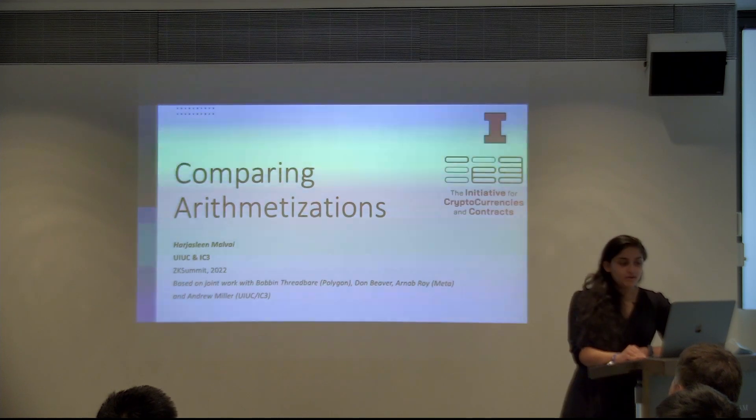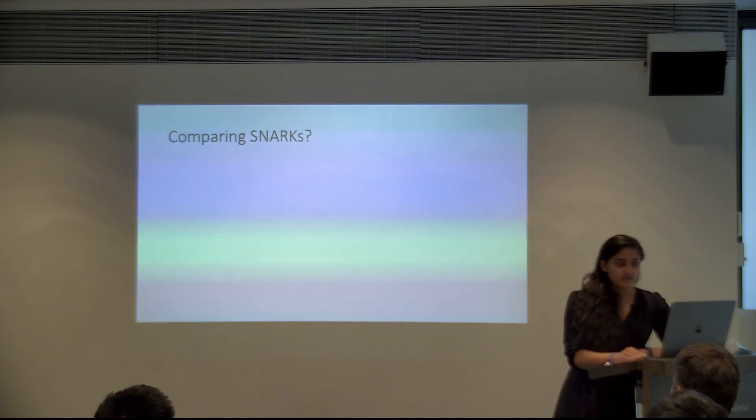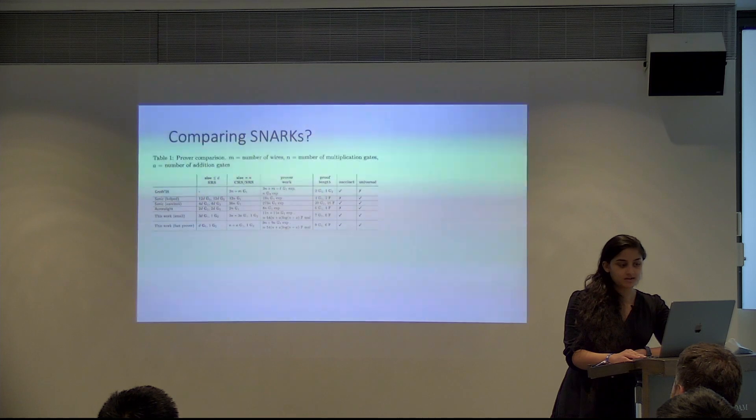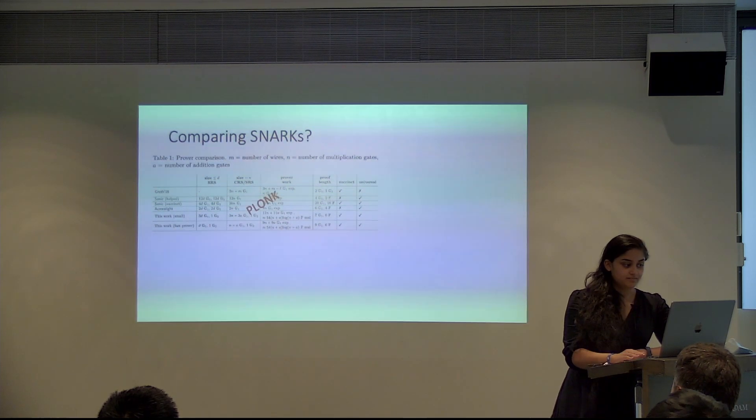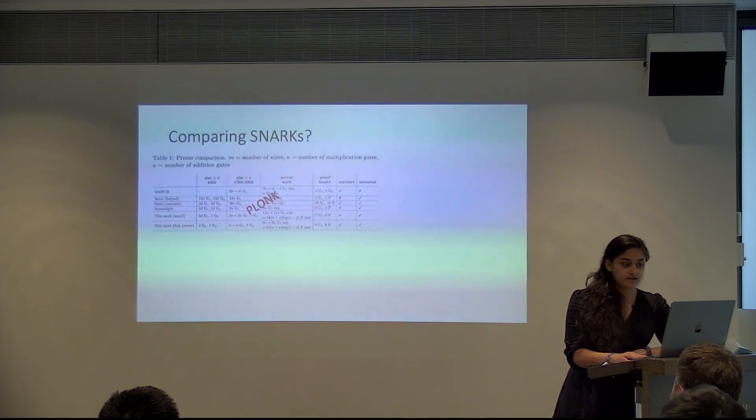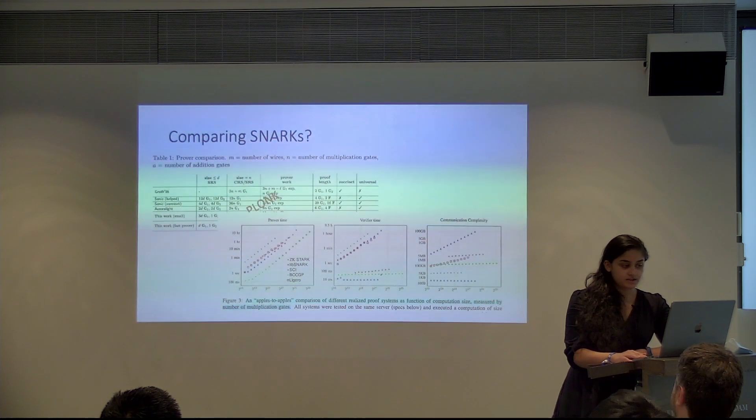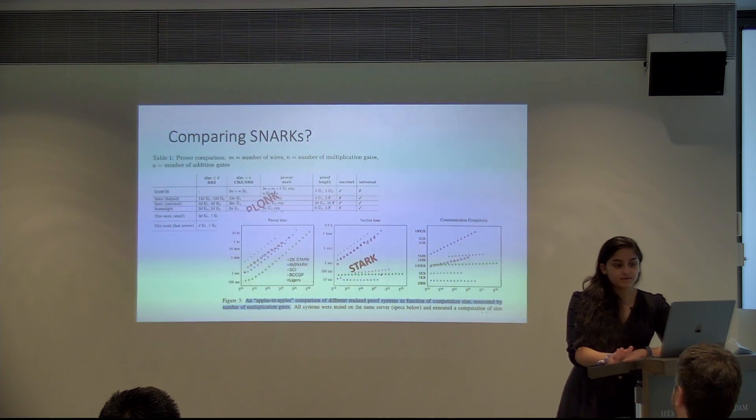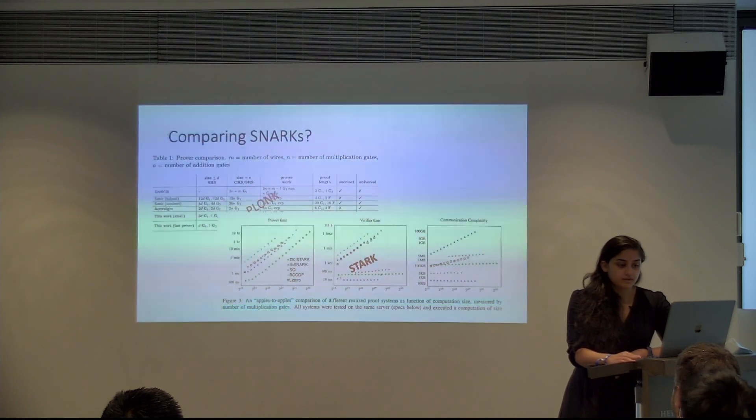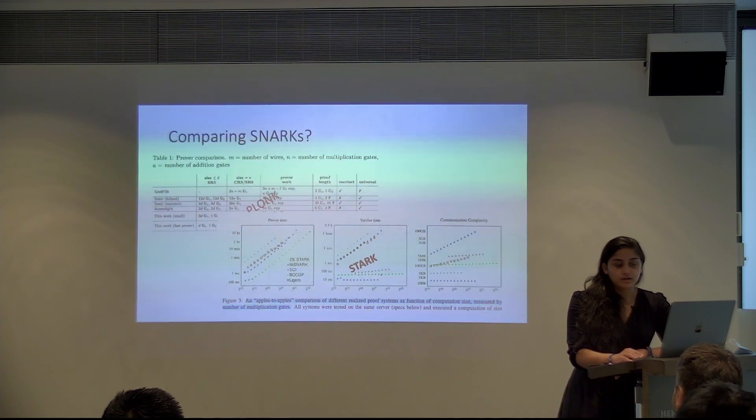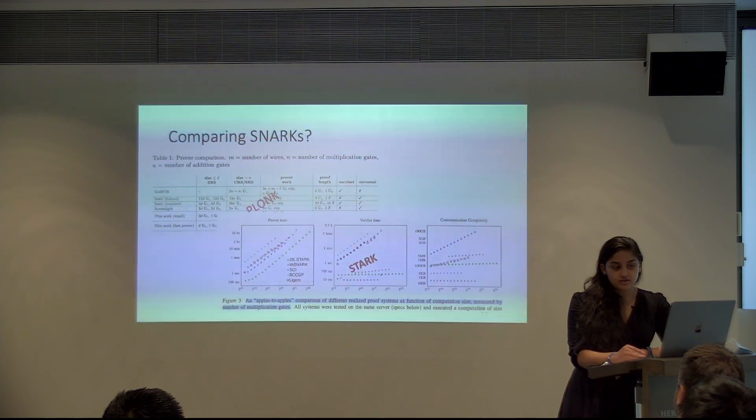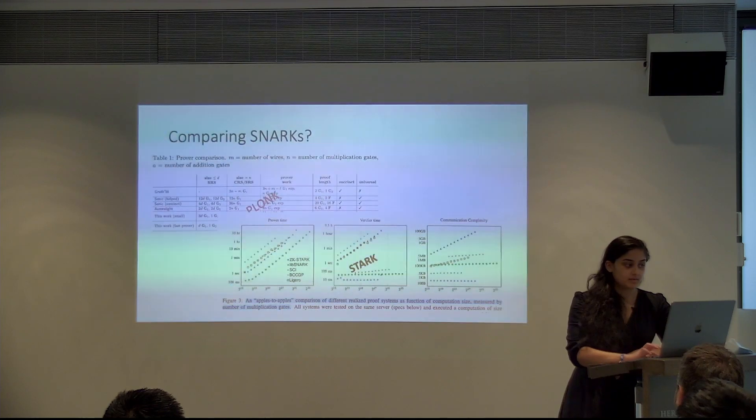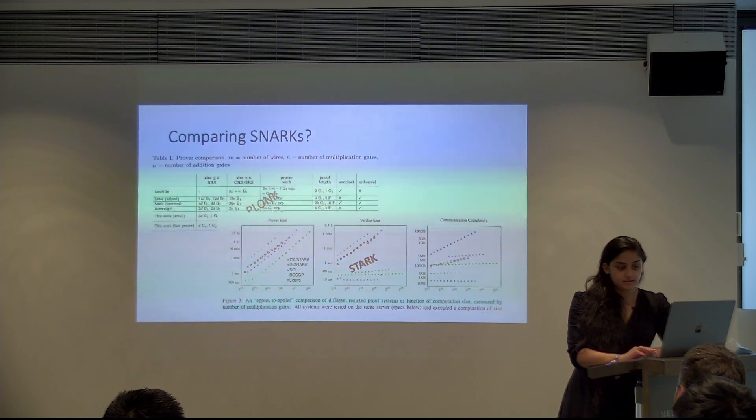So what do I even mean when I say comparing SNARKs? You probably are going to say people do this all the time. They have every paper has this evaluation section. Here's one from the Planck paper and they provide a bunch of comparisons with other work. Here's another one. This is from the Starks paper. But the thing is most of these papers compare with other works based on their full end-to-end performances on the same program.